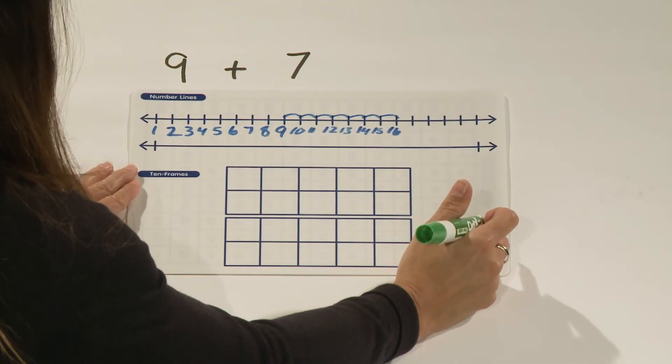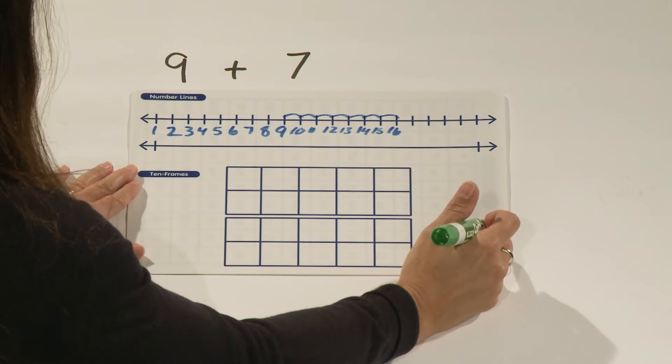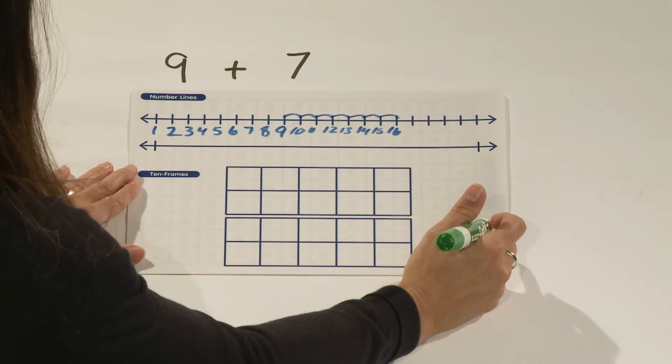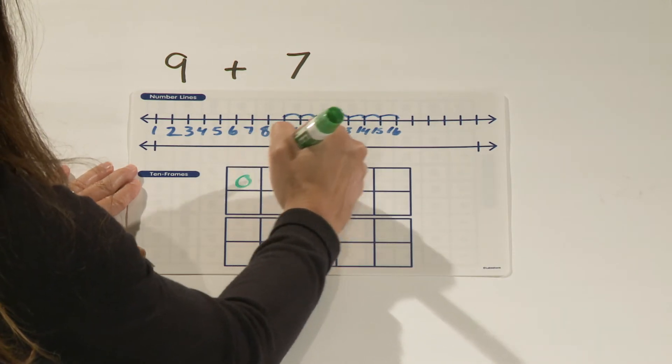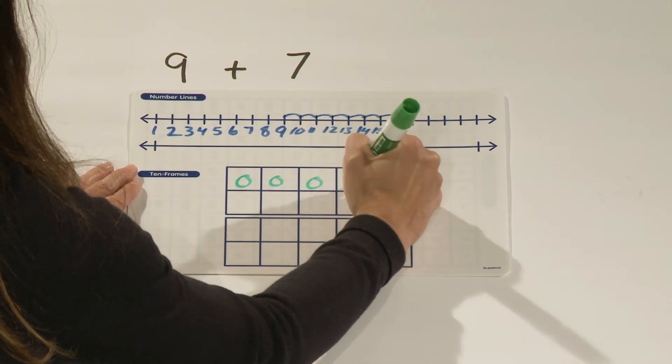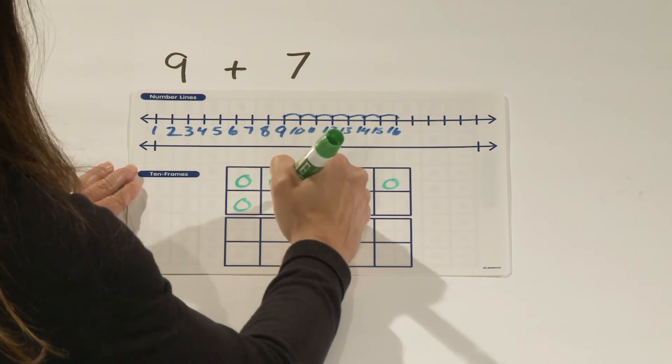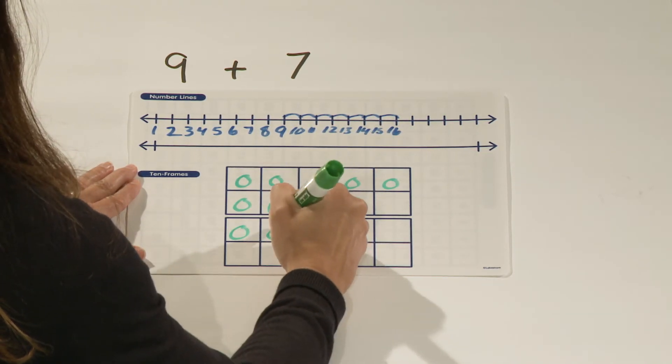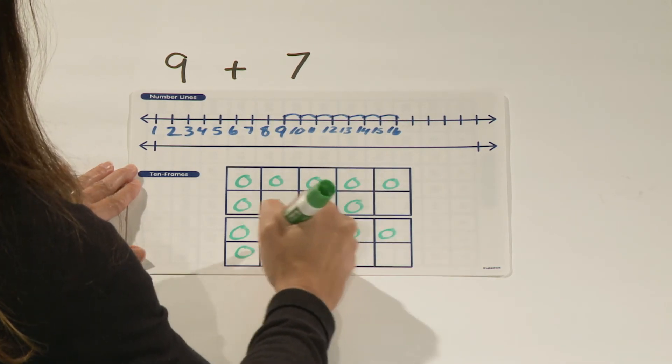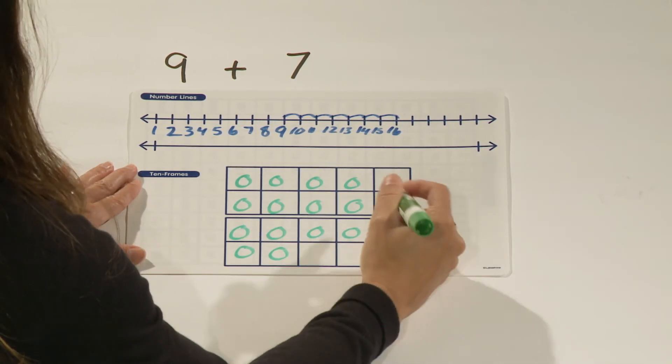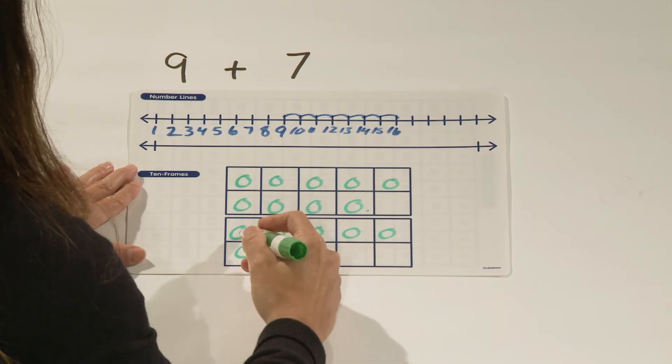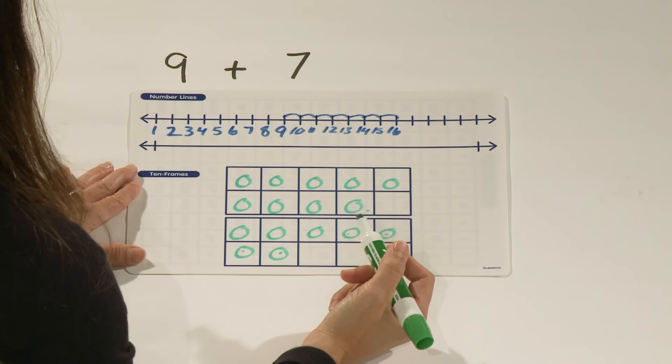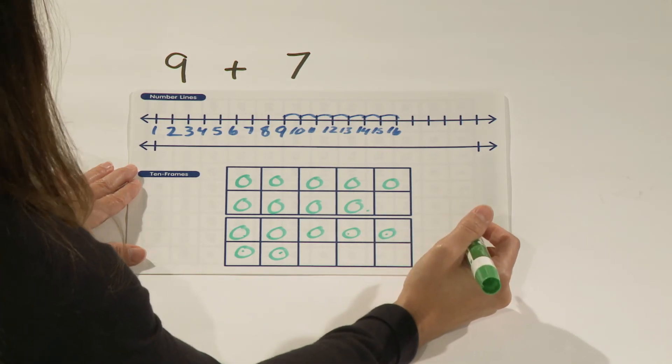Another tool that we use is the 10 frame. In this example, we're going to use a double 10 frame to model 9 plus 7. I'm going to start by showing 9 on the first 10 frame and 7 on the second 10 frame. And again, I can count on from 9, 10, 11, 12, 13, 14, 15, 16 to find out that the sum is 16.